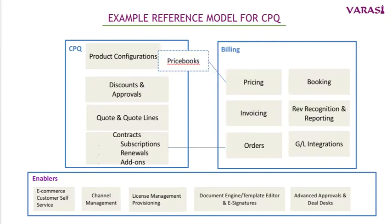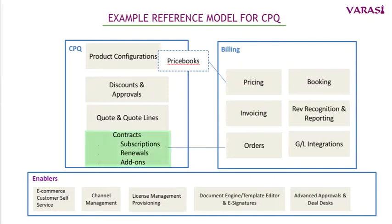Discounts and approvals are configured in CPQ, and managing the information on quotes and individual quote line items is against standard CPQ functionality. Given that this example is coming from the SaaS world, you have the subscriptions, the add-ons, the renewals — they're all captured against contracts. In the picture you're seeing the opportunities transitioning to become orders.